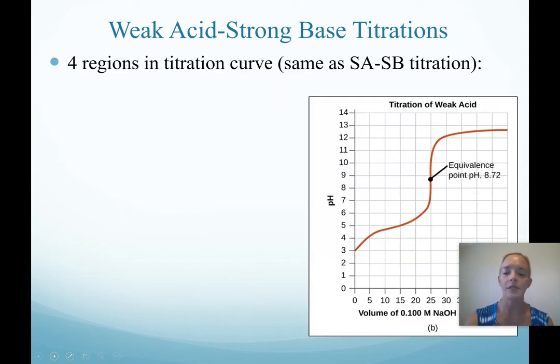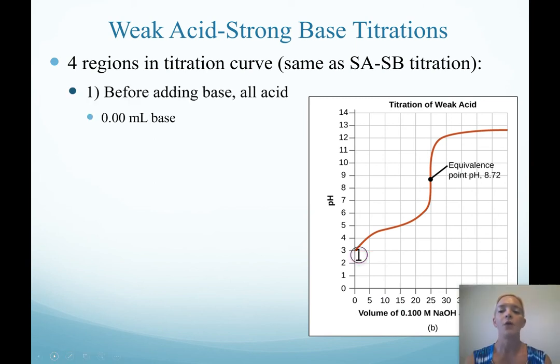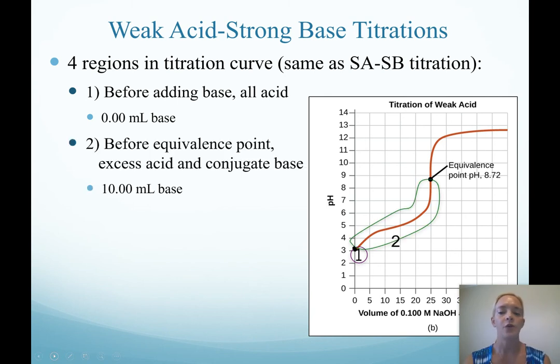I wanted to point out our titration curve again. We have the same four points. The first one is before we add any base—all we have in solution is our acid and how we calculate the pH of that. Region 2 is when we have excess acid and this will always be the buffer zone.